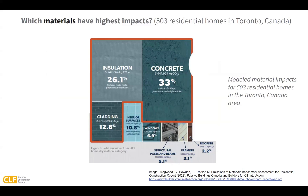The final study I'll share on material impacts was of 503 different residential homes in the Toronto area of Canada. The authors found that concrete, insulation, and cladding were the highest contributors to embodied carbon. Overall, we see some similarities and differences across different building types and sizes.